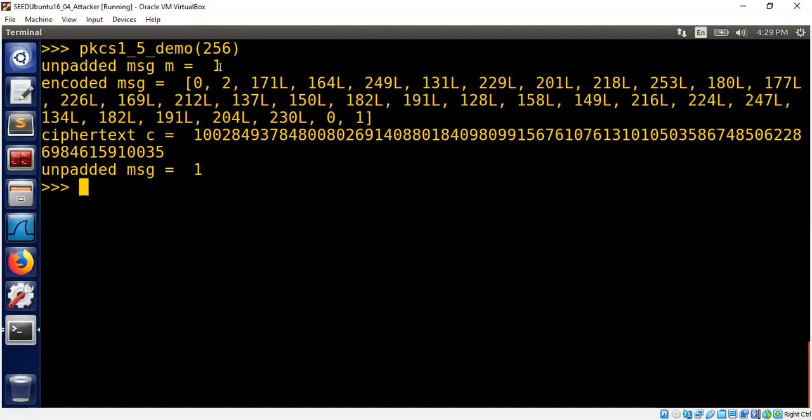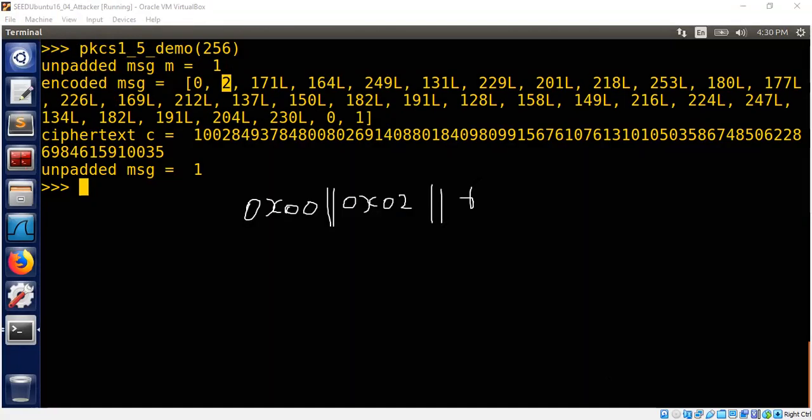So, my unpadded message is 1, but look at the encoded message. Encoded means before encryption, we just transformed it into padding, and this is the padded message should have been the right text, but anyway, you see here, the first byte is 0, the next byte is 2, as I explained on my whiteboard, followed by 0 again. And then the message.